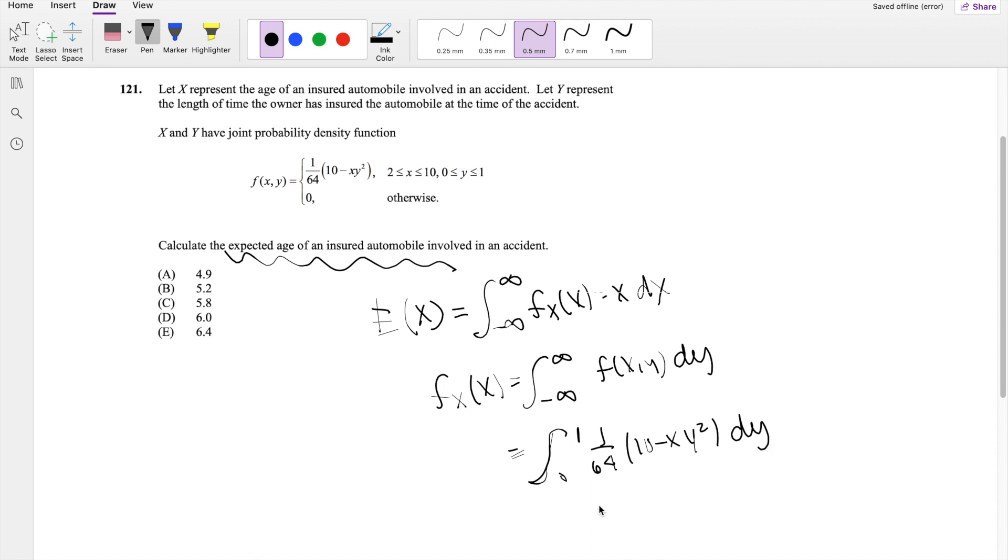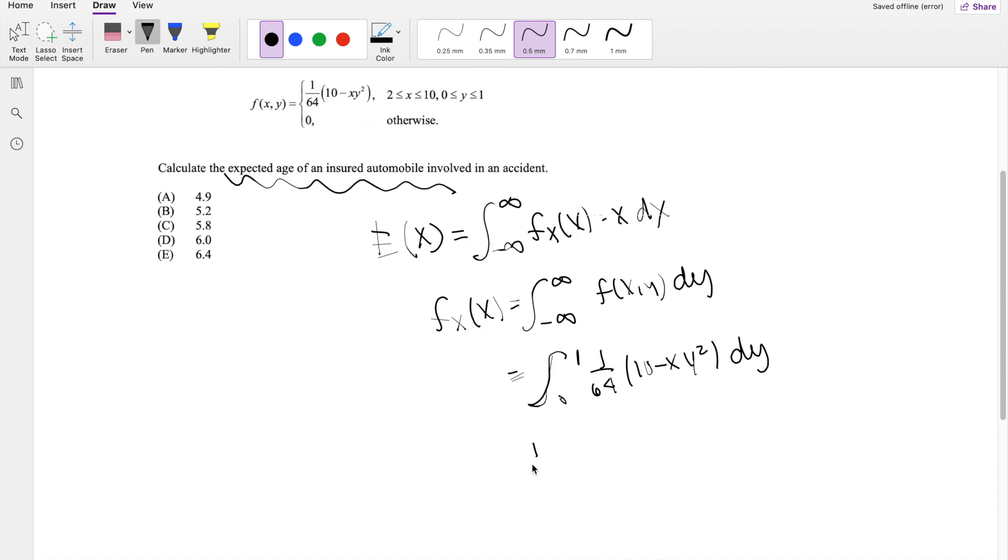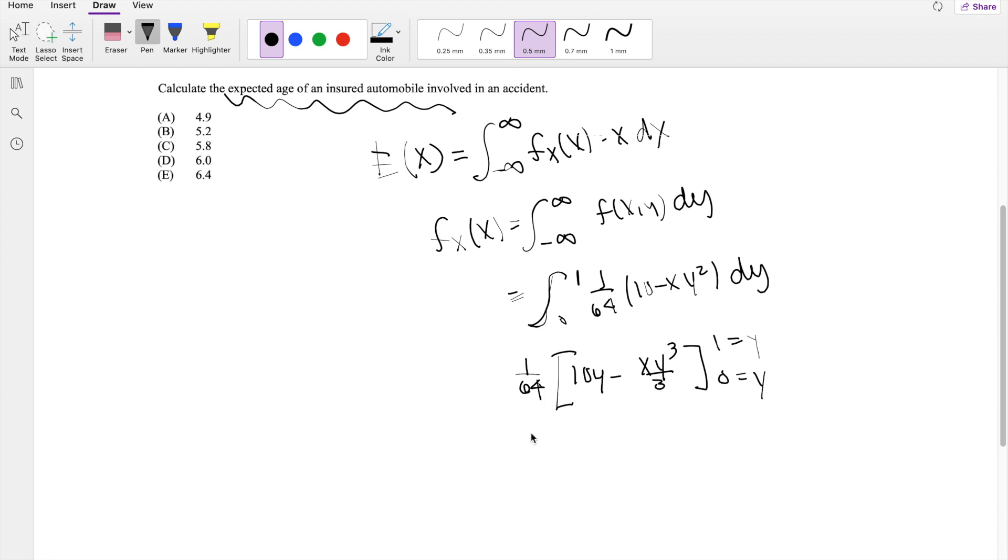So if we integrate with respect to Y, this is equal to 1 over 64. It's just a constant, I'm going to throw it outside. And you get 10Y minus X Y cubed over 3, integrating with respect to Y going from 0 to 1. The lower limit just gives you 0, so we're just worried about the upper limit. When you plug in the lower limit, you actually just get 0. So then this is equal to 10 minus X over 3.